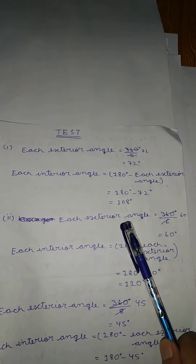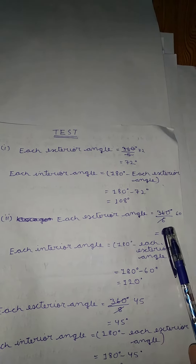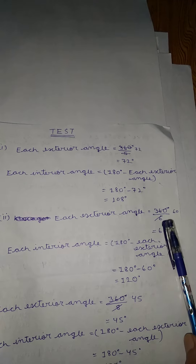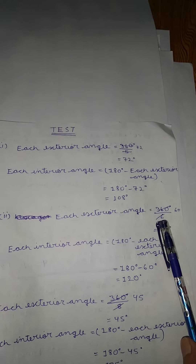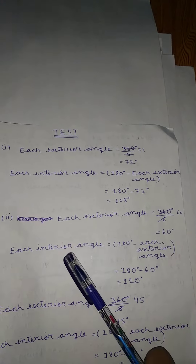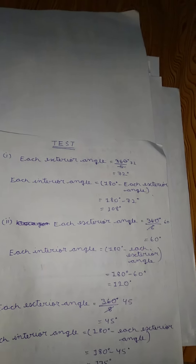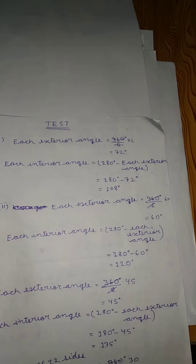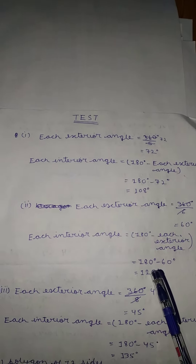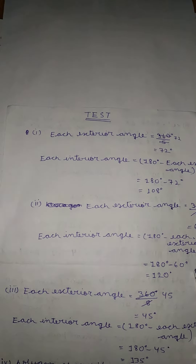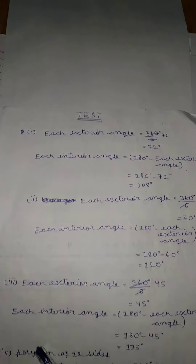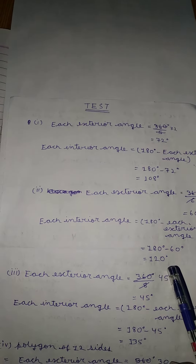For the hexagon, each exterior angle is equal to 360 divided by 6, which gives 60 degrees. The interior angle is equal to 180 minus each exterior angle: 180 minus 60 degrees equals 120 degrees.